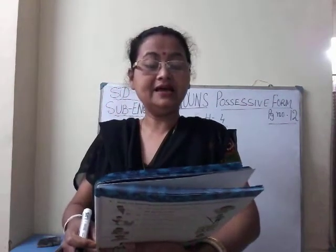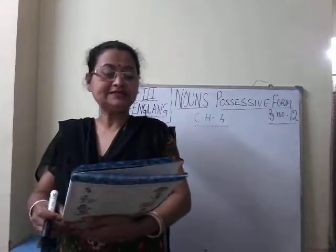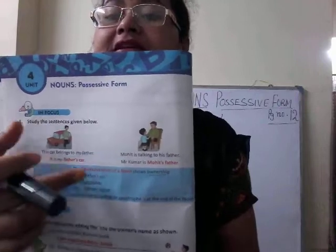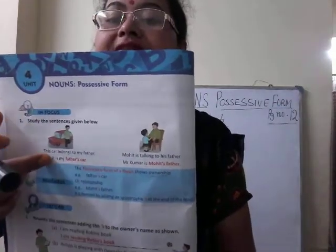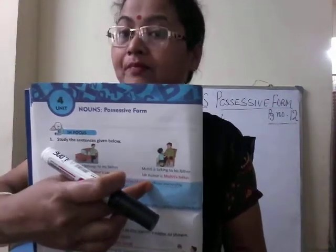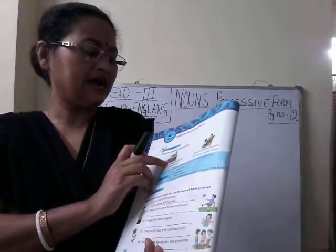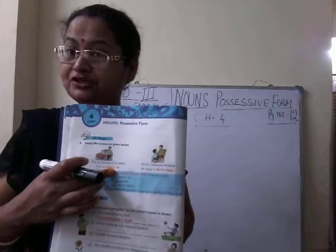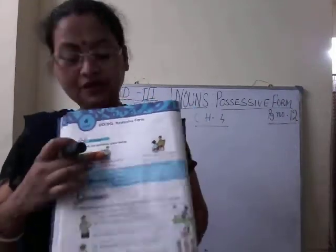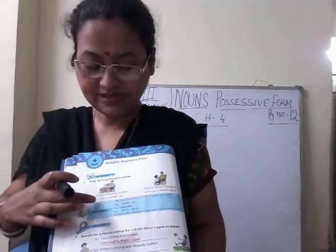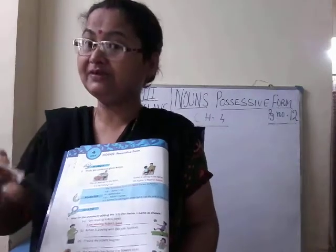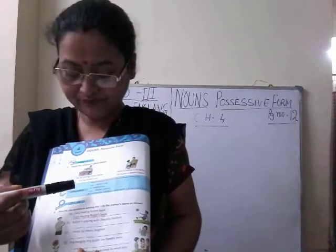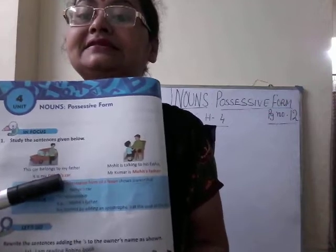On page 12 of your book, read the sentences. Study the sentences below — you can see four sentences written. Look at the picture and read the sentences; the concept will be clearer to you. In the first picture: 'This card belongs to my father' means 'This is my father's card.' In possessive form, we use apostrophe S. So 'this card belongs to my father' becomes 'my father's card,' showing the ownership of the card. We have used apostrophe S here.